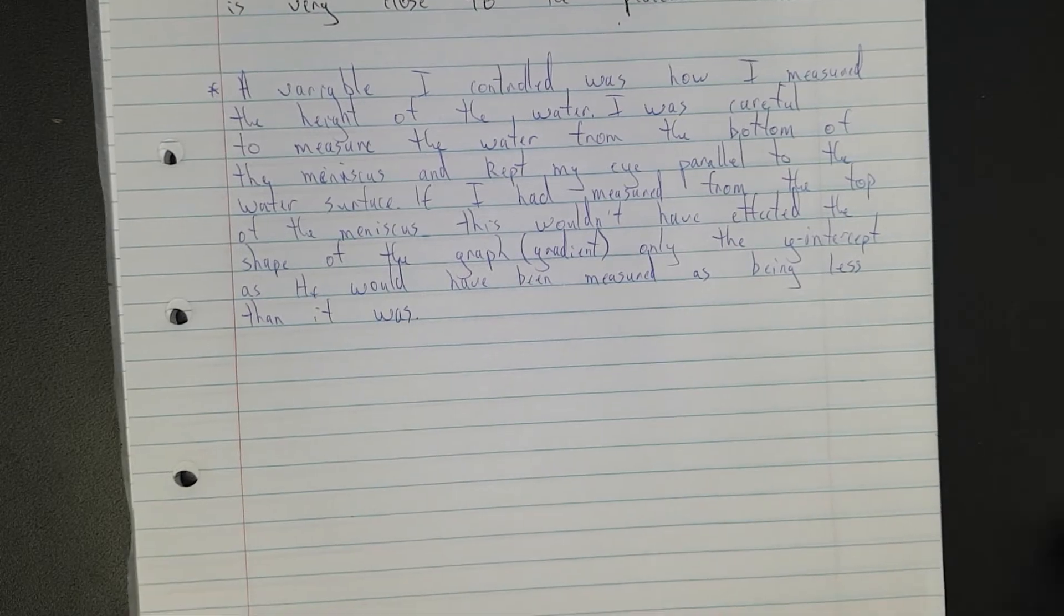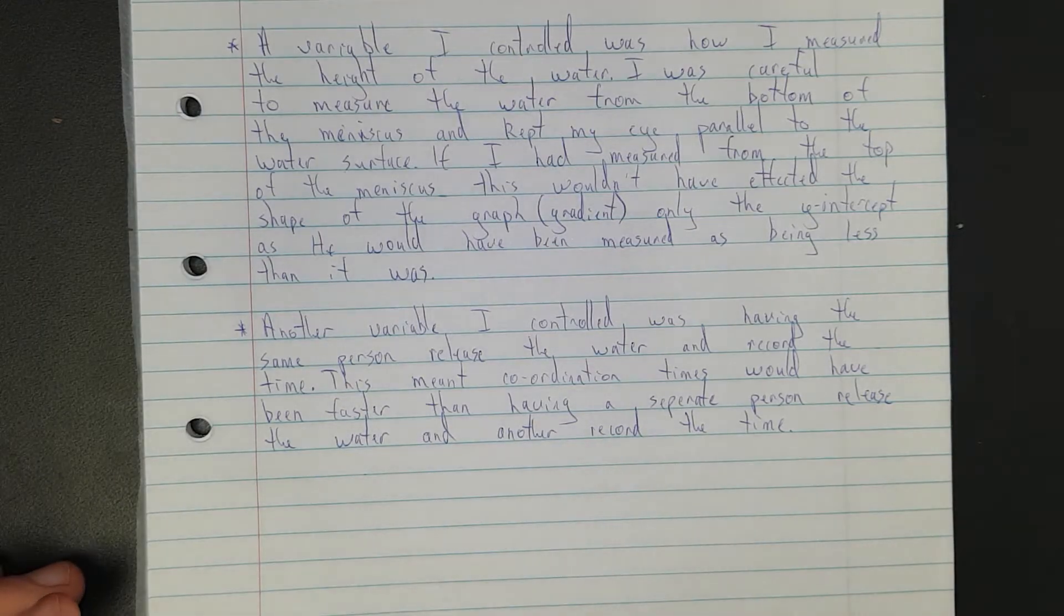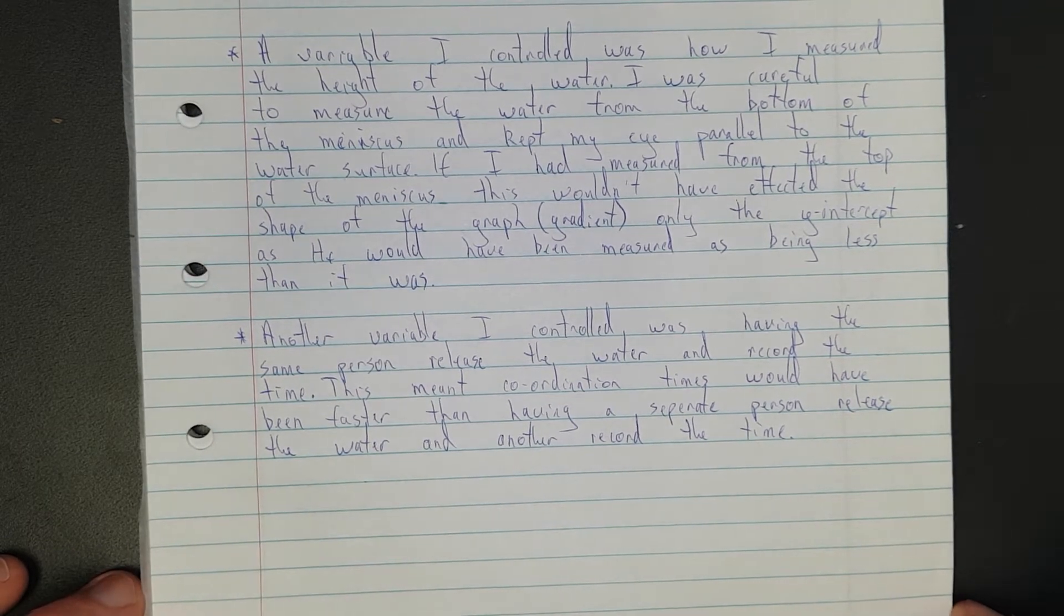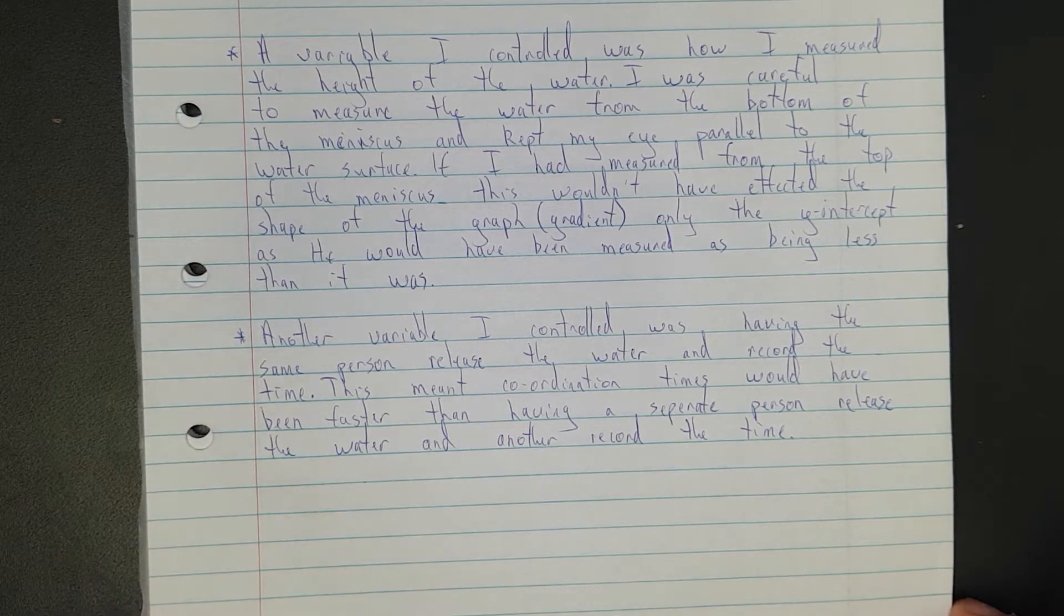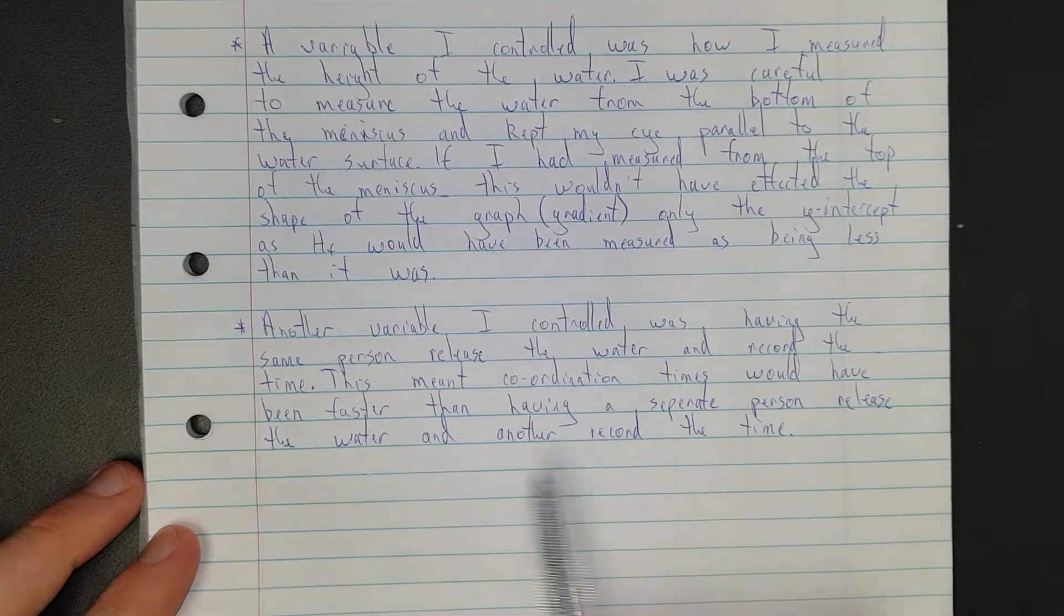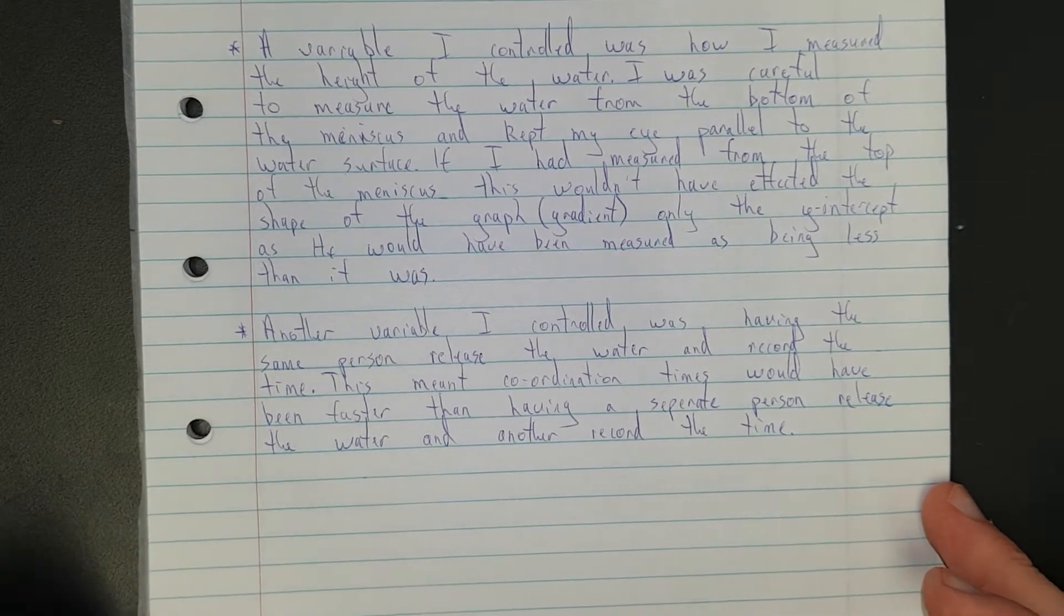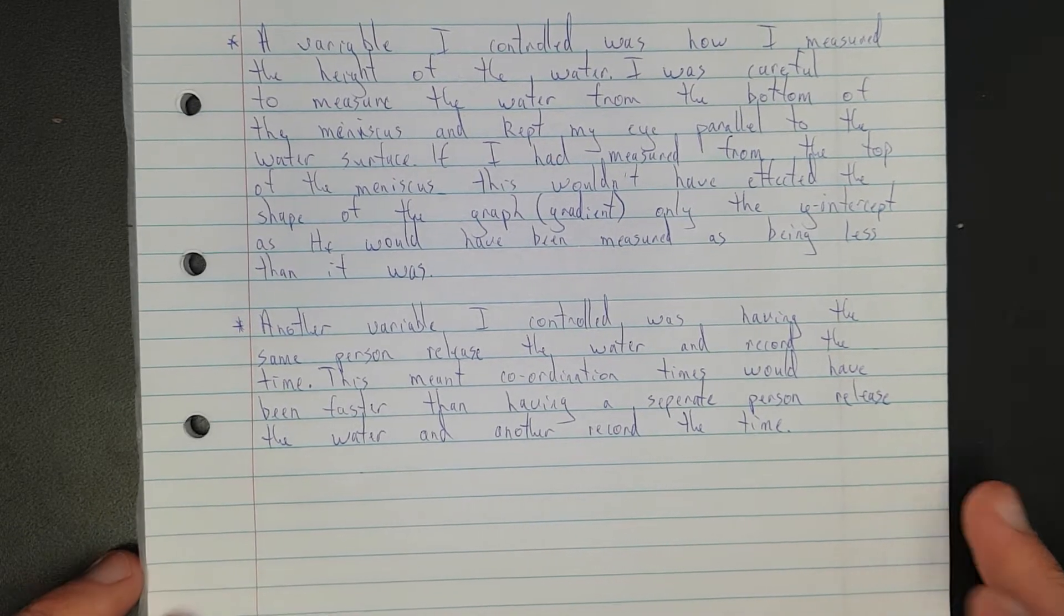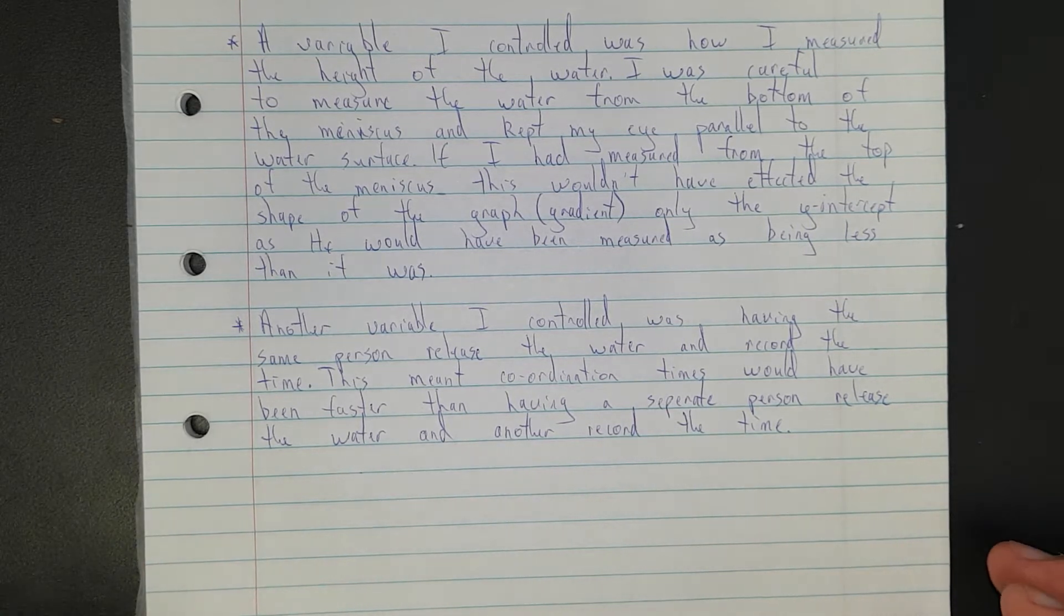Right, so I'll write up another one and then I'll discuss. So another variable I controlled was having the same person release the water and record the time. This meant coordination times would have been faster than having a separate person release the water and another record the time. This isn't the best variable controlled and I was obviously the only person doing it. But I added it in there just because it's a small thing that you can tack on.